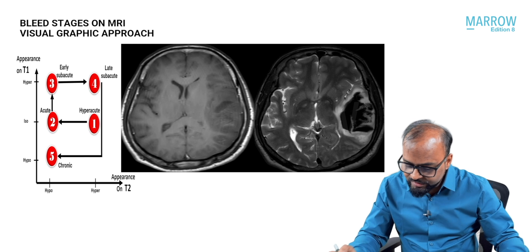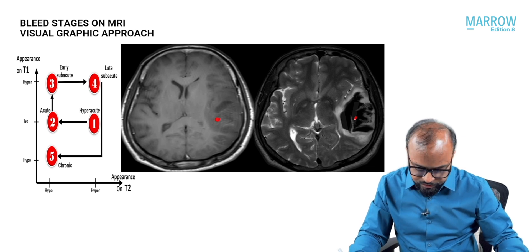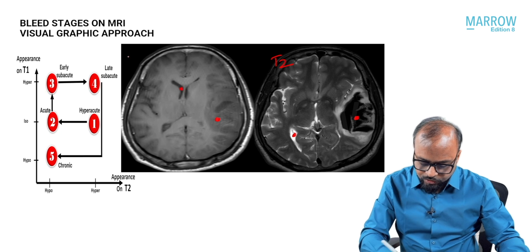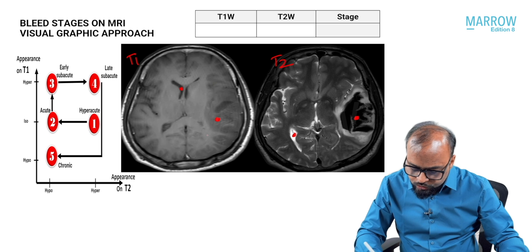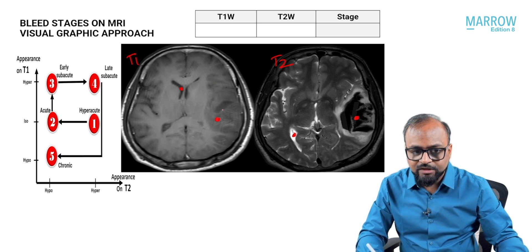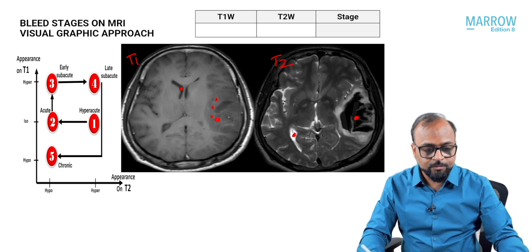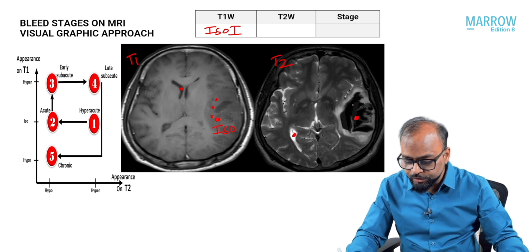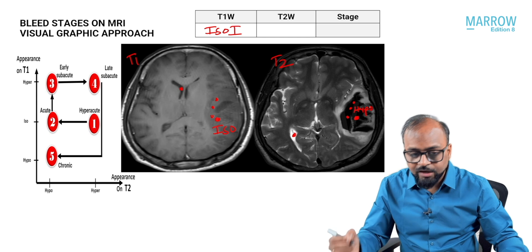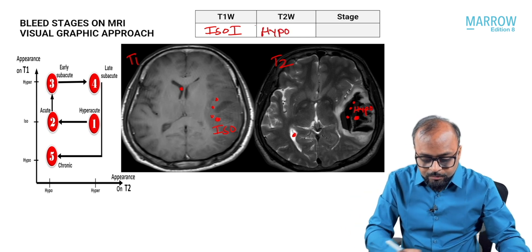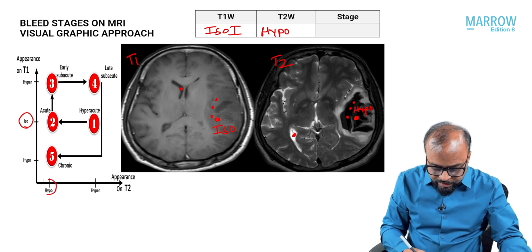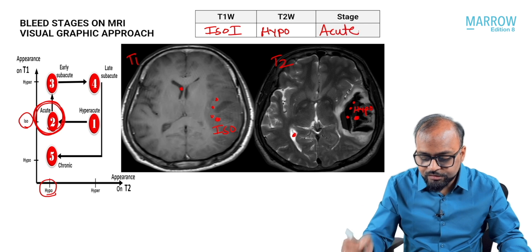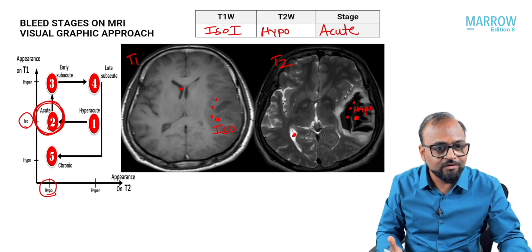Now looking at the next image: the lesion is identified here. Water is bright on T2 and dark on T1. Most of the lesion — except a small central part — appears similar to brain on T1, so it is iso-intense. On T2, most of the lesion appears dark, so it is hypo-intense. On the graph: iso on T1 and hypo on T2 places us at the acute stage of bleed.